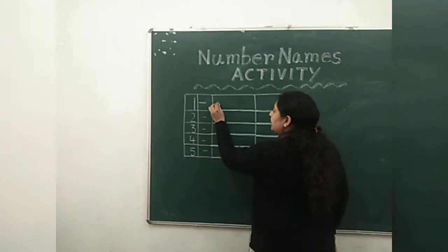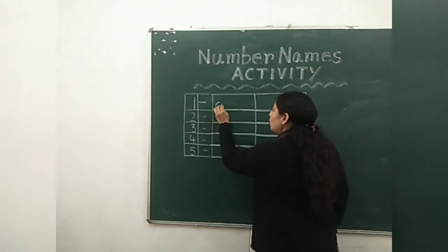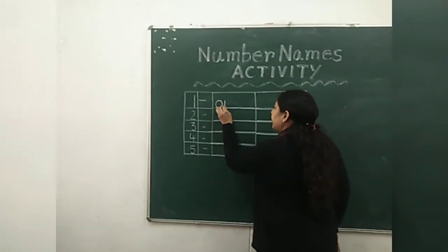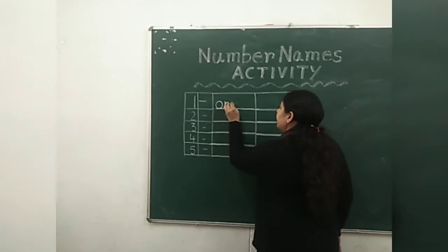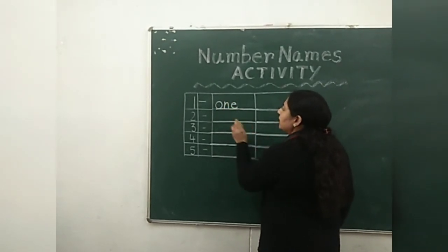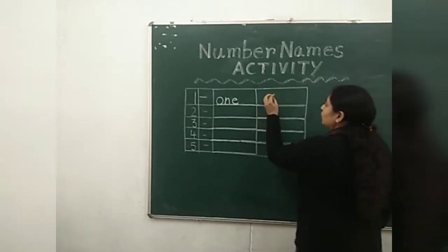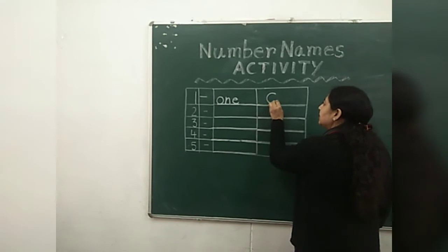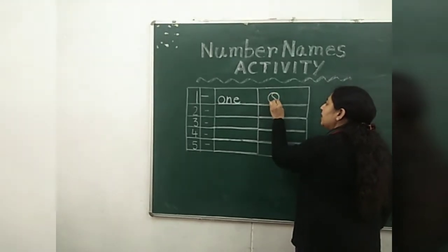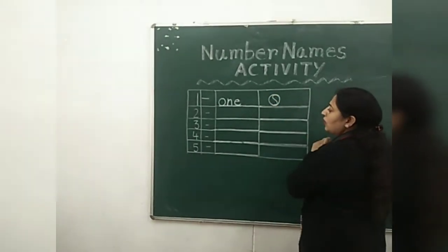One. The spelling of one is O-N-E. One. Now we will draw this. Finally we will draw one ball.